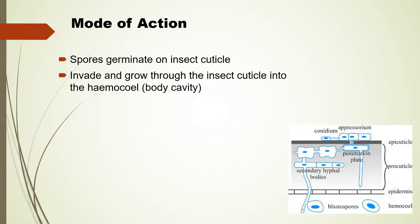Once germinated, they invade through the insect cuticle into the body cavity in a very similar way to plant pathogens. They produce a specialized structure called an appressorium — a group of cells that produce enzymes necessary to soften whatever the fungus needs to penetrate through, and also give mechanical purchase to push through. The insect cuticle has waxes requiring lipases, and the fungus also needs cellulases and proteases — a whole series of enzymes.